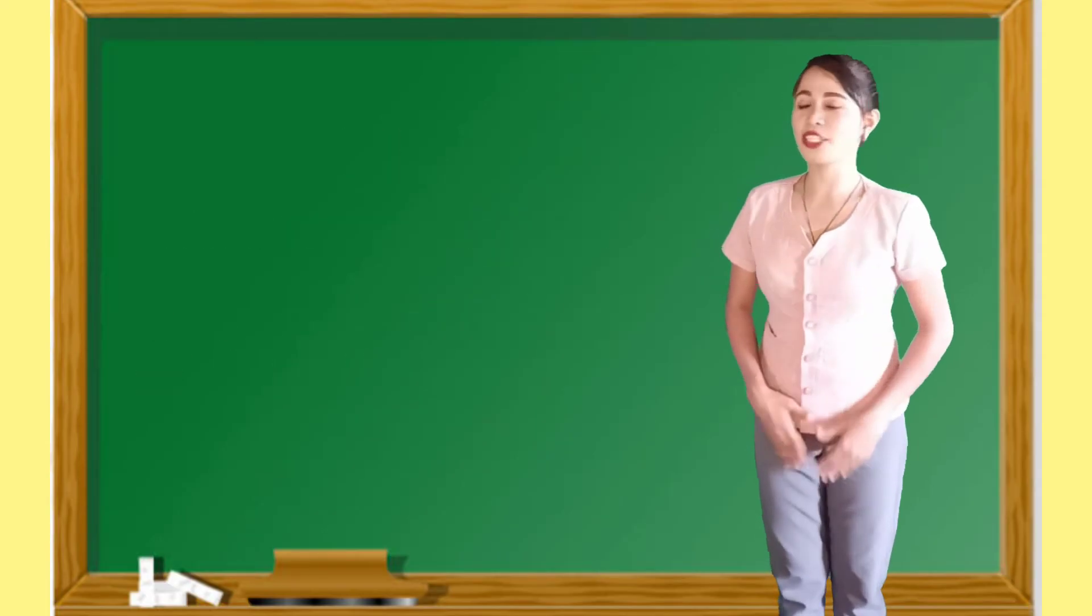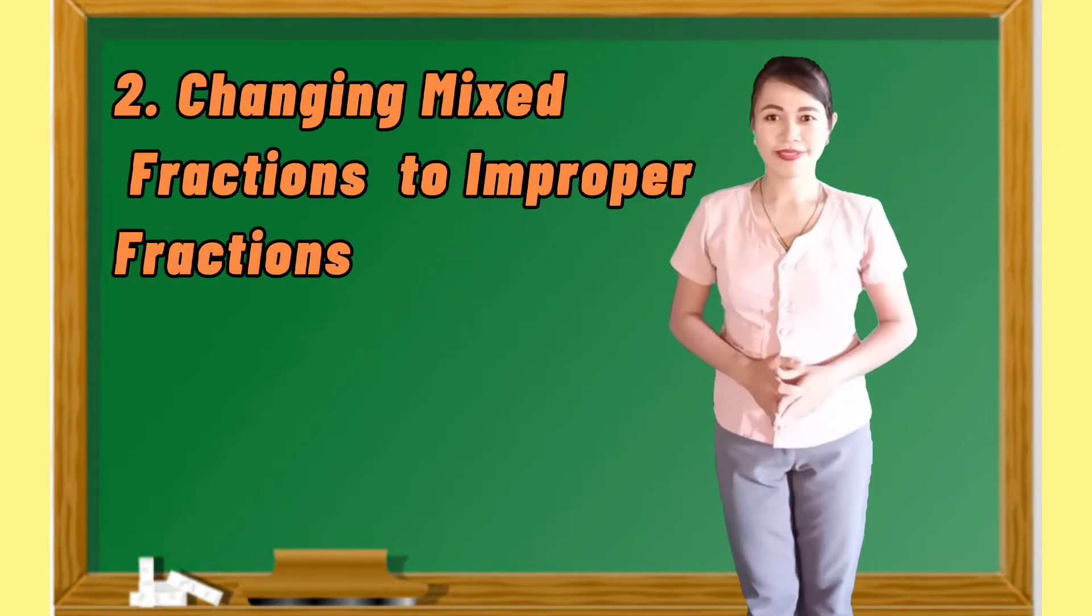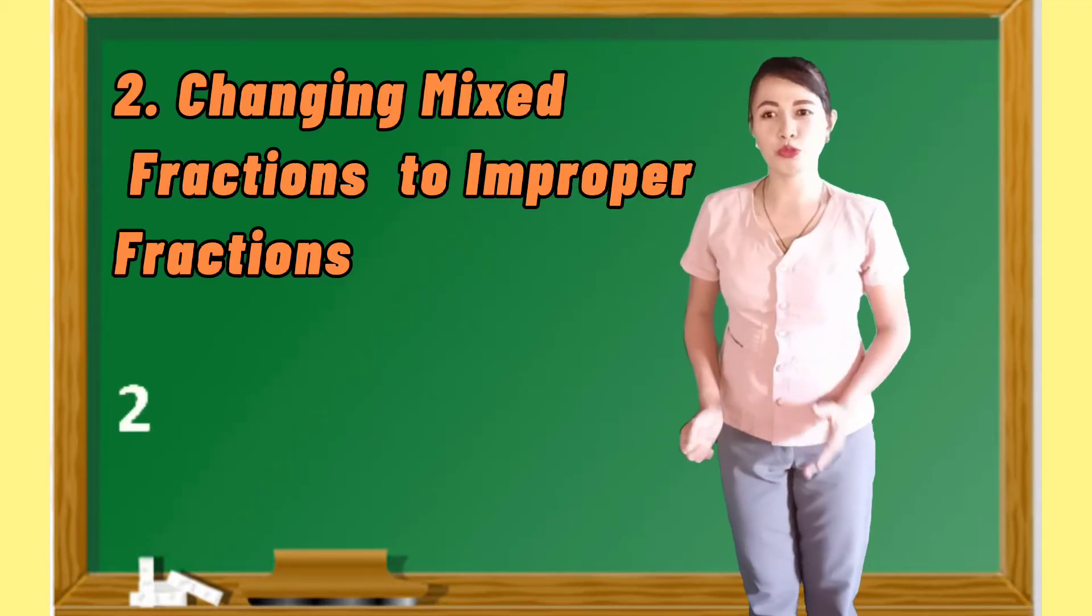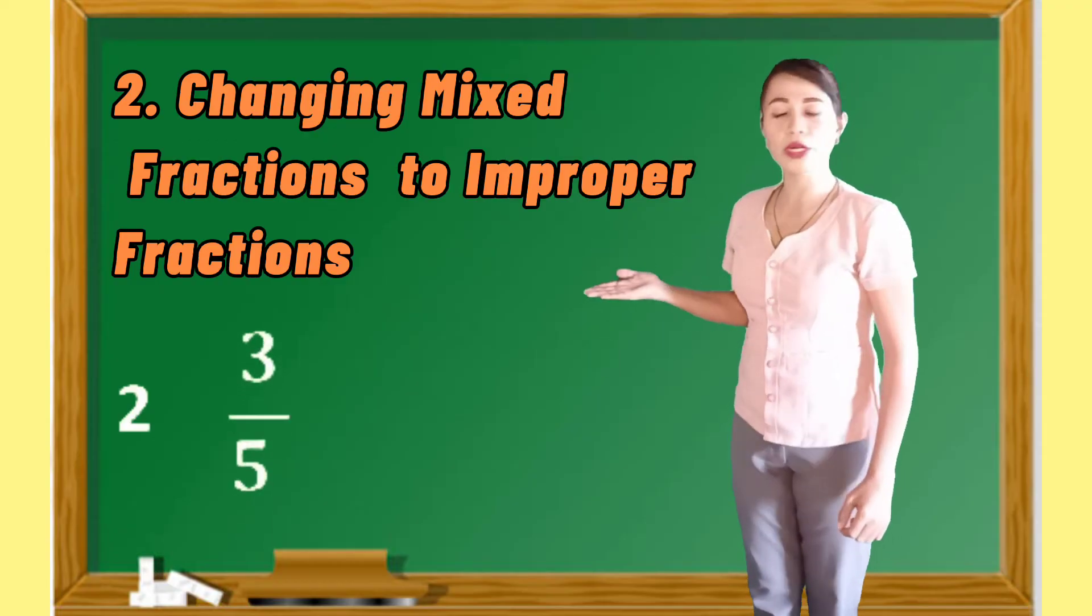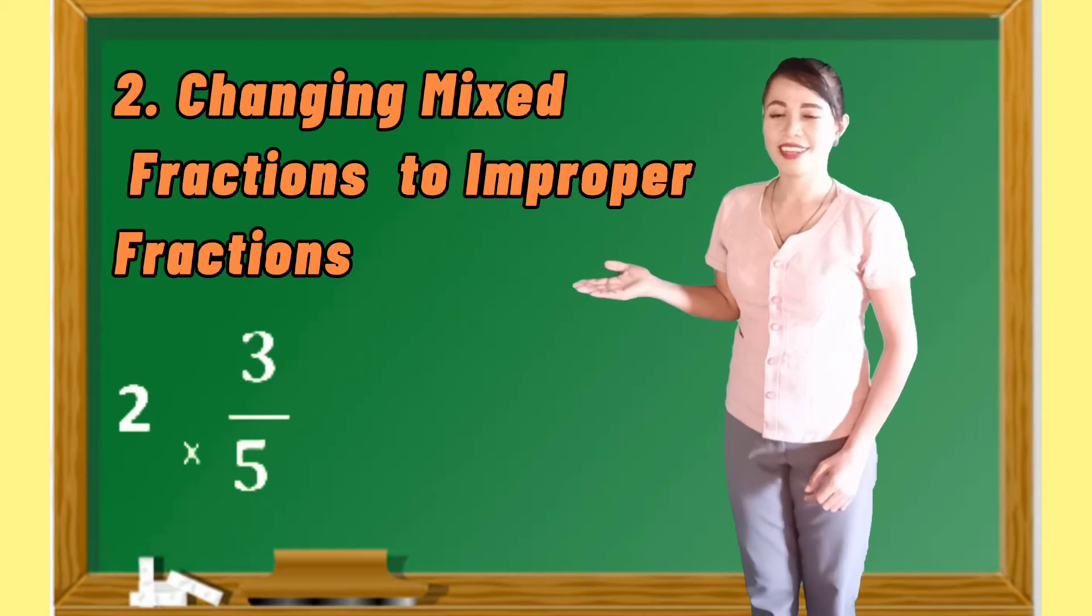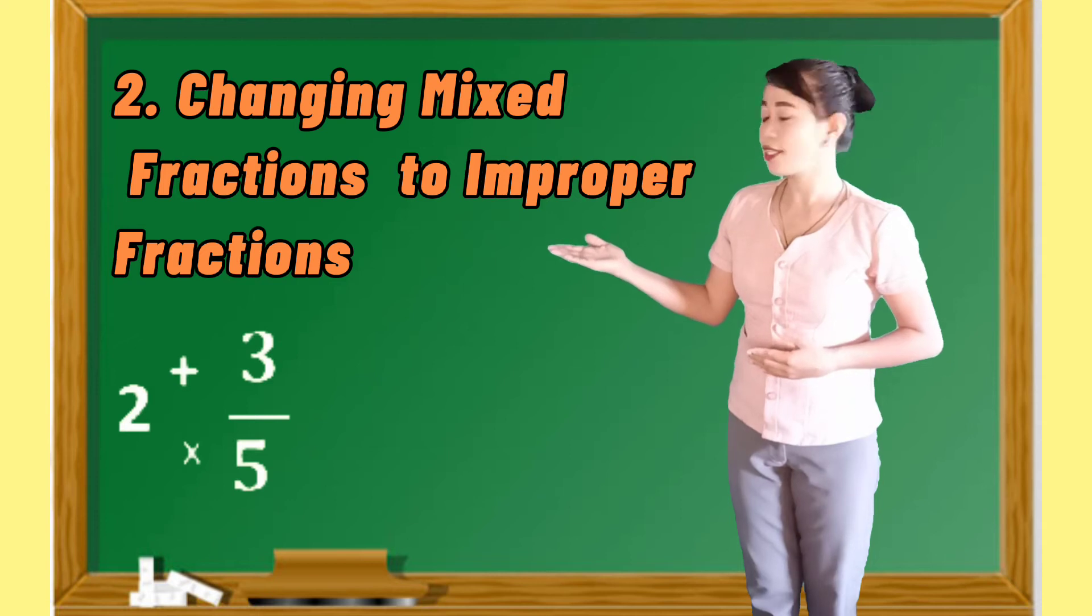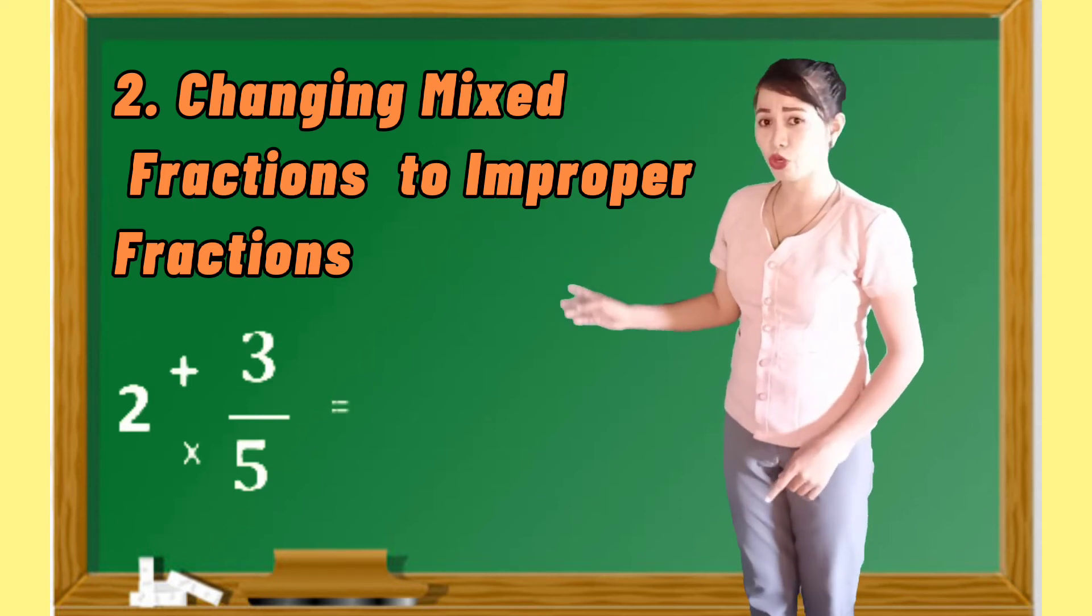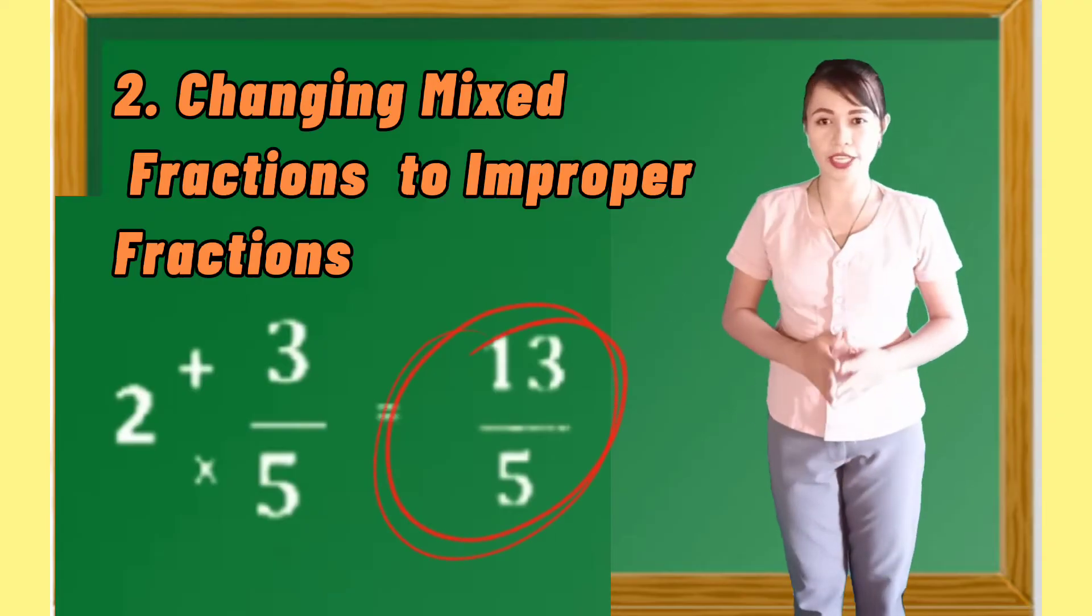Alright, another thing that we need to review is that changing mixed fraction to improper fractions. For example, we have 2 and 3 fifth. So, we have to multiply first the denominator, which is 5, and the whole number, which is 2. So, 5 times 2 is equals to 10. And then, we're going to add the numerator, which is 3. So, 10 plus 3 is equals to 13. And copy only the denominator, which is 5. So, we have 13 over 5 or 13 fifth.